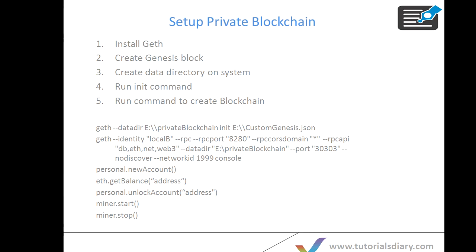First of all, Git has to be installed on your system. If you don't know how to install Git, I recommend going to one of our videos where we've shown how to install Git on Windows — I'll share the link below. Then we'll create the Genesis block. At a very high level, the Genesis block is the first block on a blockchain. Since we are setting up our own blockchain, you have to start with the Genesis block, and you'll keep on adding blocks on top of it.